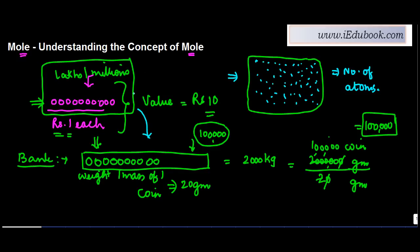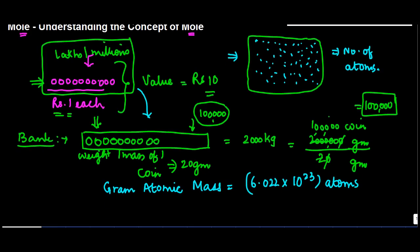Now the scientists through experiments have found out that a gram atomic mass contains 6.022 × 10^23 atoms. So what this means is that if you are talking about the gram atomic mass of, let's say, oxygen, which we took in a previous example, which was 16 grams.